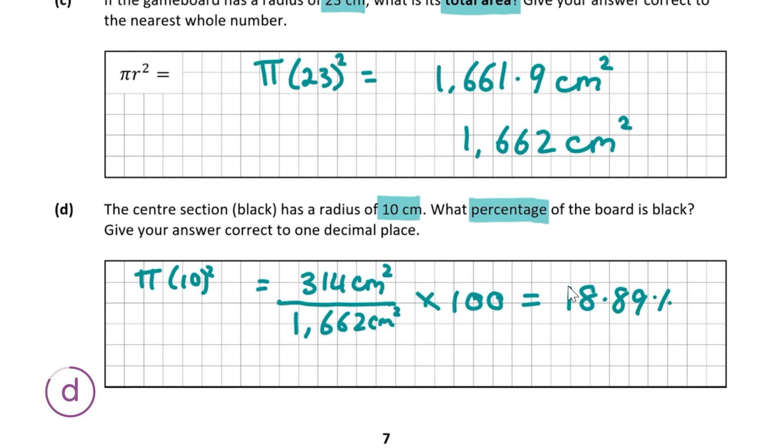But it's asking us to give our answer correct to one decimal place, so we round the 8 to 9. The answer is 18.9 percent. I'm going to draw a yellow box around this to make it clear that's my answer.